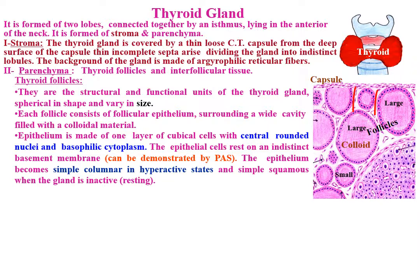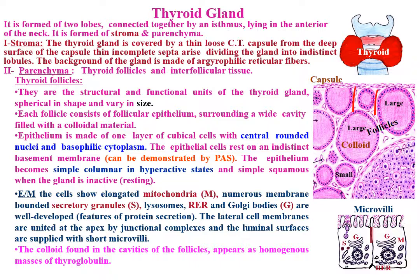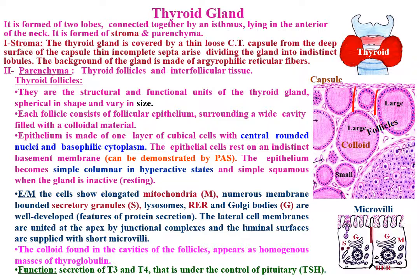The epithelium becomes simple columnar in hyperactive states and simple squamous when the gland is inactive. By electron microscopy, the cells show elongated mitochondria, numerous membrane-bounded secretory granules, lysosomes, rough endoplasmic reticulum, and well-developed Golgi bodies — features of protein-secreting cells. The lateral cell membranes are united at the apex by junctional complexes, and the luminal surfaces have short microvilli. The colloid found in follicle cavities appears as homogenous masses of thyroglobulin. Function: secretion of T3 and T4, under control of the pituitary thyroid-stimulating hormone.